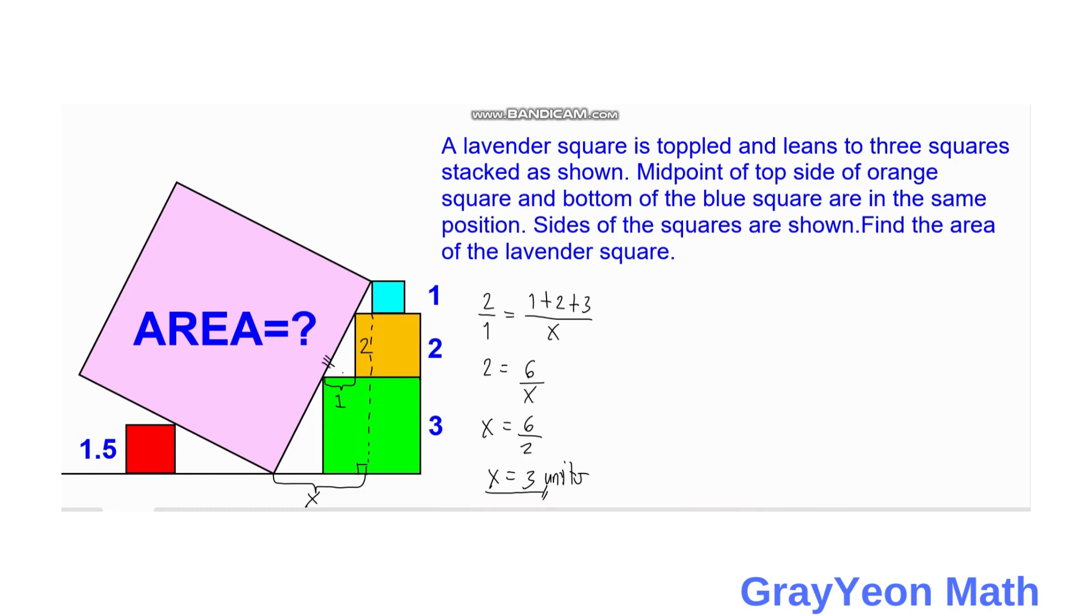So that would be the hypotenuse, so s would be equal to the square root of 6 squared plus 3 squared, and s is equal to square root of 36 plus 9.